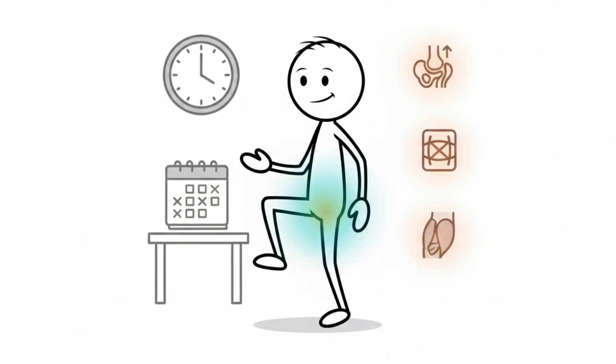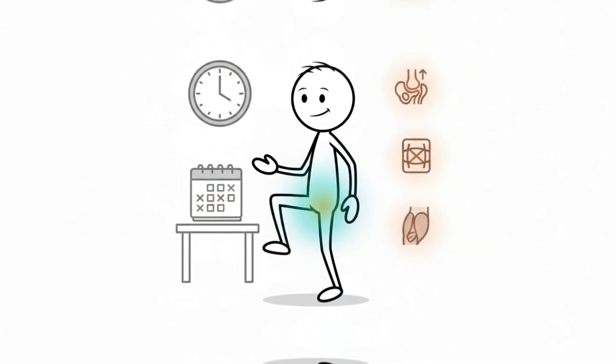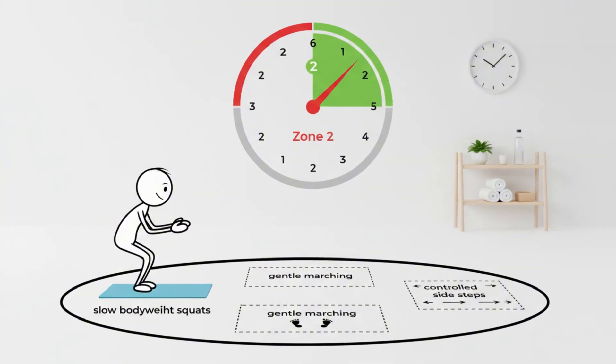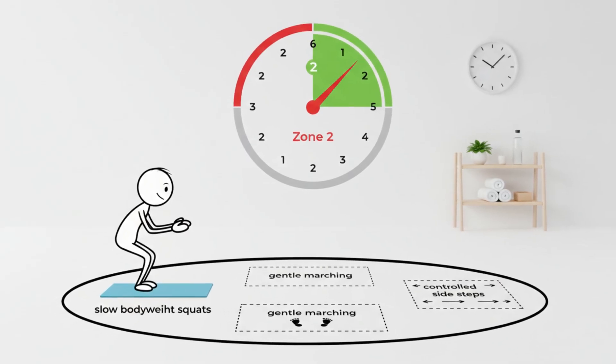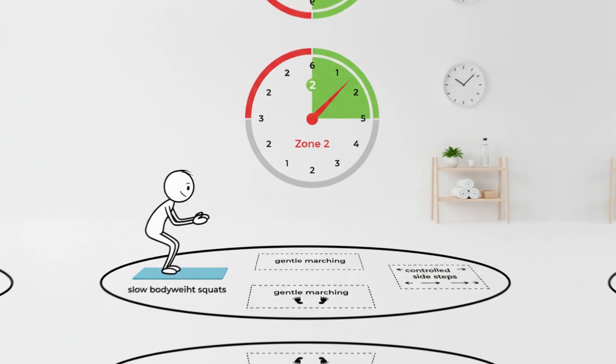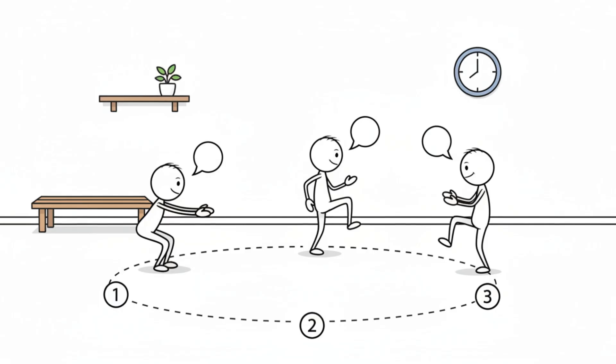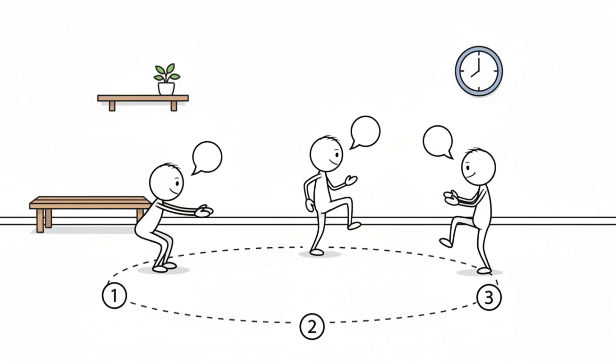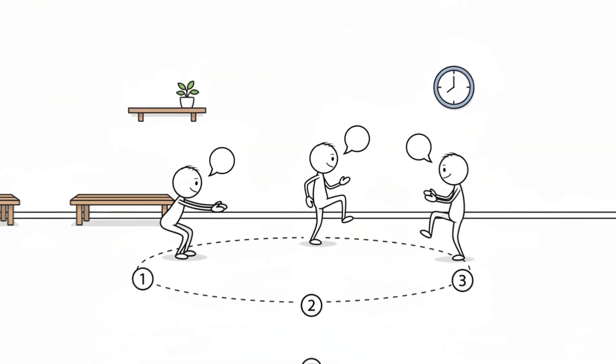Indoor sequence 6. A mini-circuit that maintains zone 2 without spikes. A mini-circuit is a smart way to avoid monotony while staying inside the zone 2 range. The trick is choosing movements that keep your heart rate stable rather than explosive. Cycling through slow bodyweight squats, gentle marches, and controlled sidesteps creates a seamless flow.